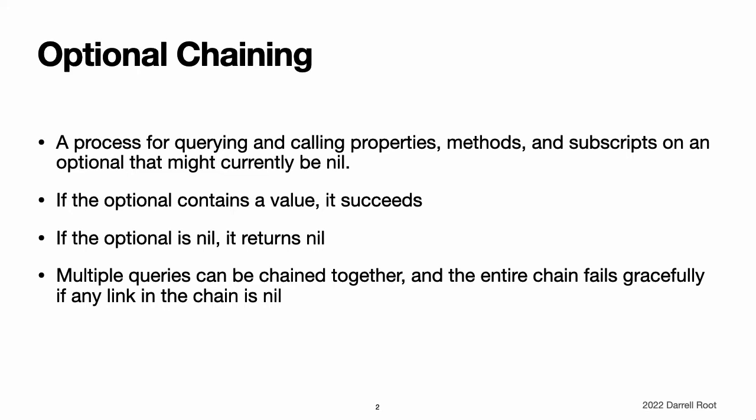Note: optional chaining in Swift is similar to messaging nil in Objective-C, but in a way that works for any type and that can be checked for success or failure.